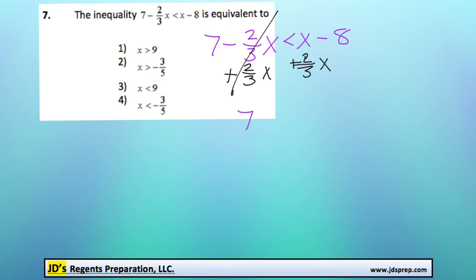So we'll be left with 7 is less than, and then x plus 2/3x is 5/3x minus 8.